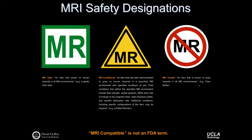On the other end of the spectrum is MR-unsafe — items known to pose a hazard in all MR environments. These could be large ferromagnetic devices, floor buffers, office chairs, ferromagnetic oxygen canisters, scissors, keys, or phones. Those devices may not be explicitly labeled by the manufacturer as MR-unsafe, so it again requires an expert to identify whether a device can or cannot be brought into the MR environment.